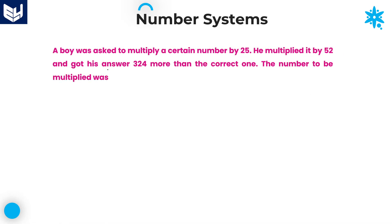Next question: a boy was asked to multiply a certain number by 25. Let us take the number as x. The correct answer should be 25x. However, he mistakenly multiplied the number x by 52 instead, giving 52x as the wrong answer.